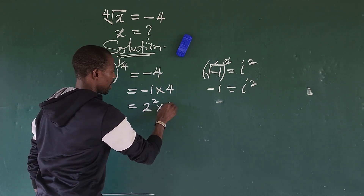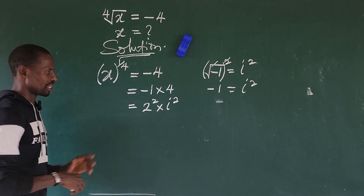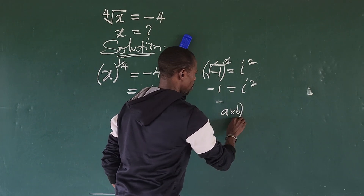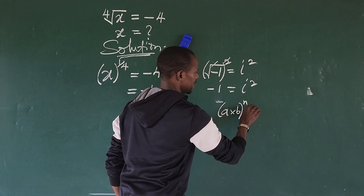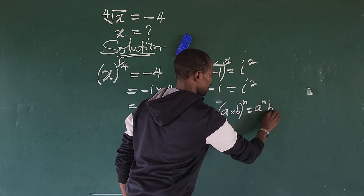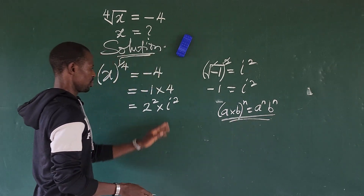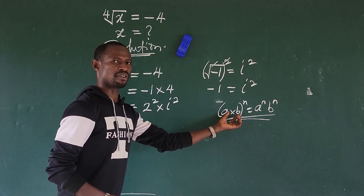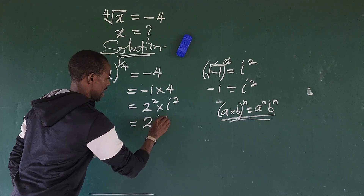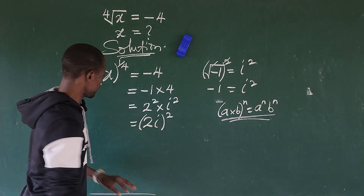So when we have two to the power of two times iota to the power of two, we recall the law of indices which says that if you have a times b to the power of n, this is equal to a to the power of n times b to the power of n. So we can rewrite this in that format, and this gives us two·iota, all to the power of two.